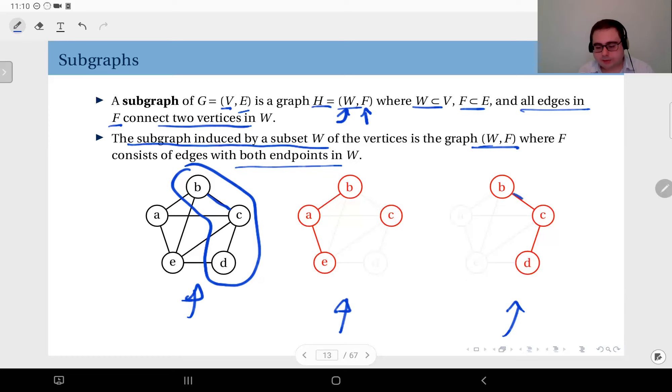There is an edge between b and c, it appears here. There is an edge between c and d, it appears here. There is an edge between a and b, but since a is not in this subset W, we do not include that edge. Similarly not this one, this one, this one, and this one. So this one on the right hand side is the subgraph induced by the subset of vertices b, c, and d.